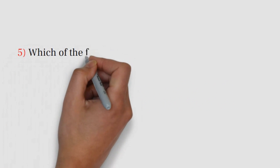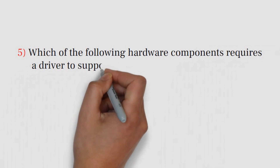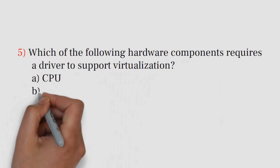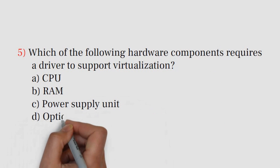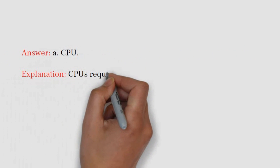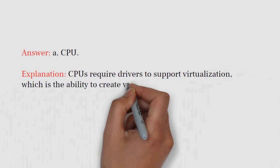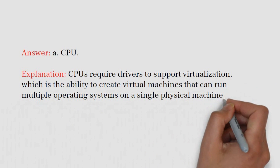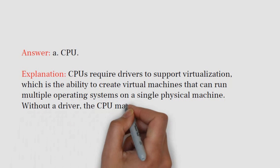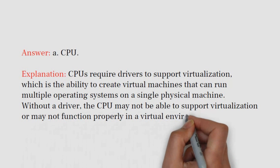Question number five: which of the following hardware components requires a driver to support virtualization? A. CPU. B. RAM. C. Power supply unit. D. Optical drive. Answer: A. CPU. Explanation: CPUs require drivers to support virtualization, which is the ability to create virtual machines that can run multiple operating systems on a single physical machine. Without a driver, the CPU may not be able to support virtualization or may not function properly in a virtual environment.